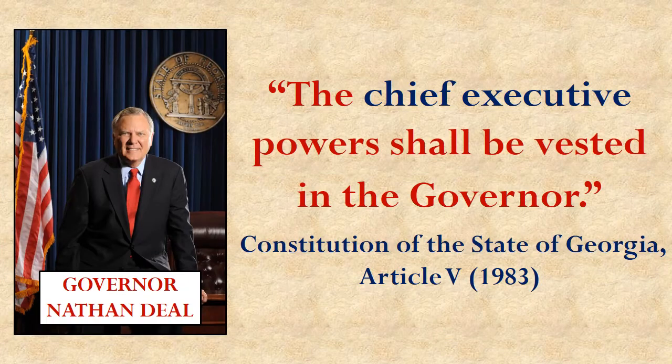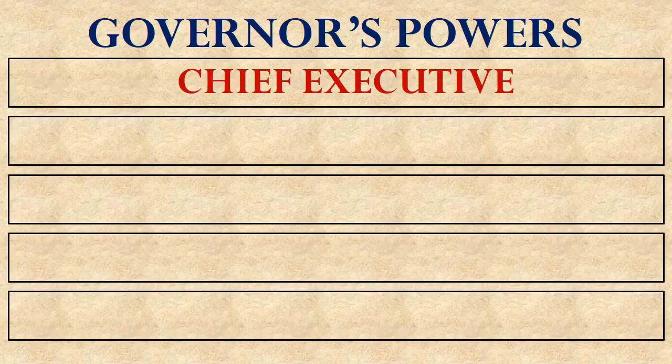The first of those powers listed in the Constitution is that the governor will be the chief executive of the state. This means that he is the chief administrator to carry out the laws. So we put that on our list: he is the chief executive.